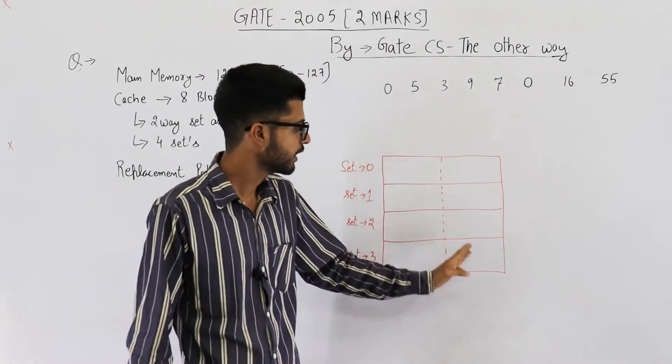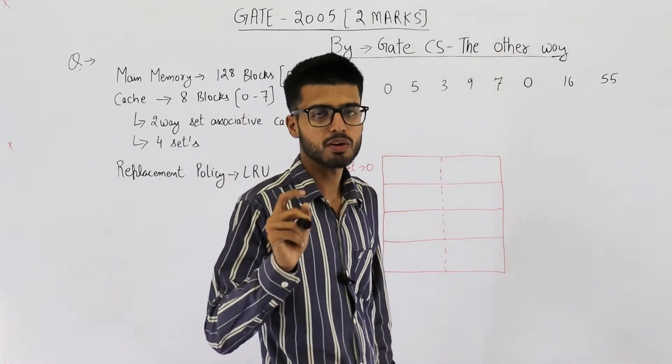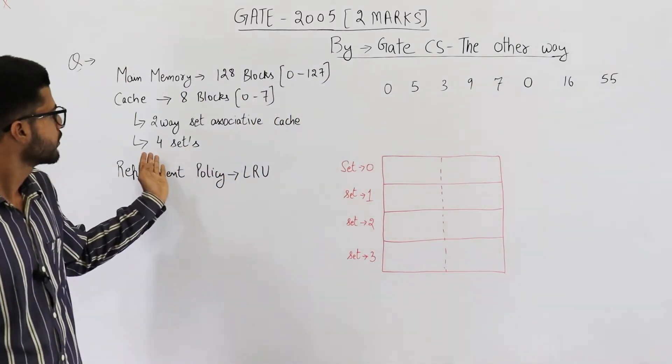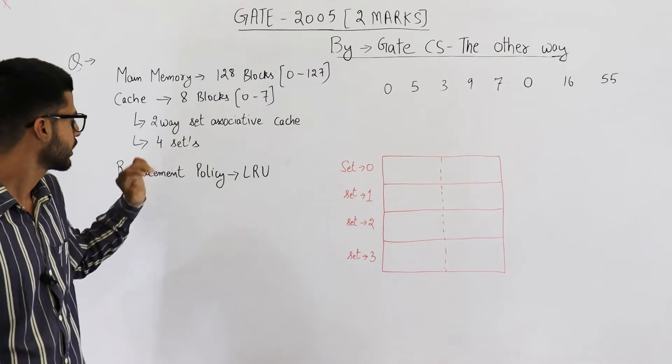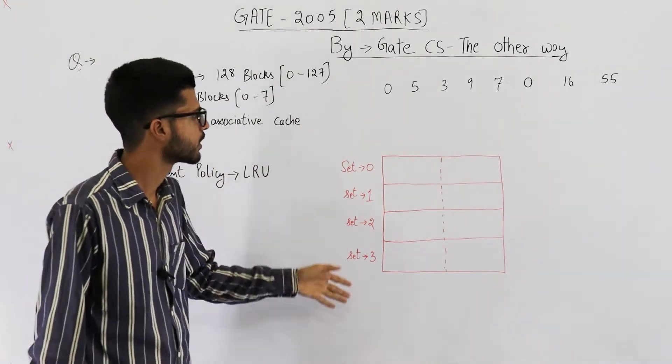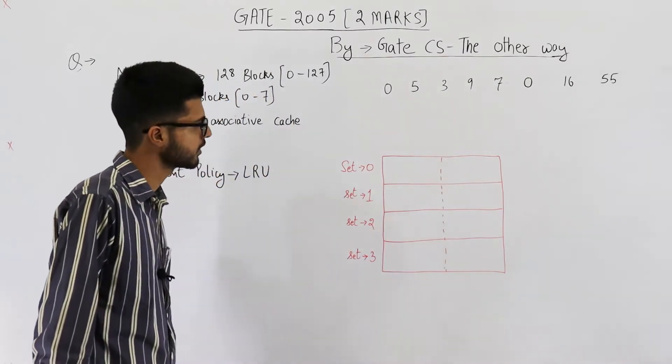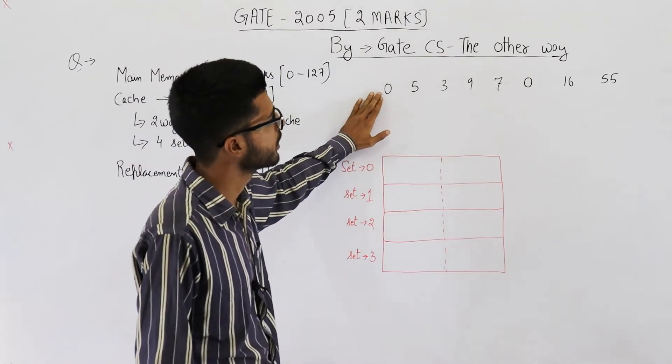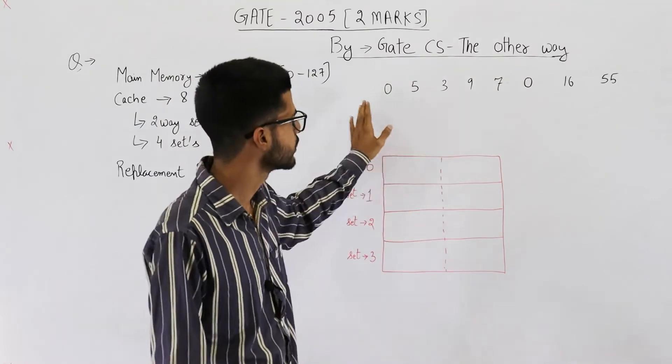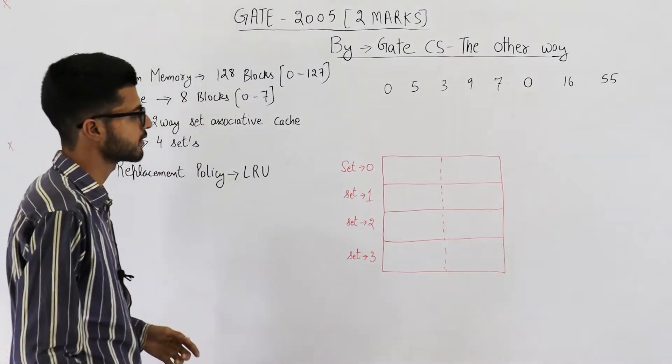Also, we have 8 cache blocks. If we combine 2 cache blocks into 1 set, we'll certainly have 4 sets only. Also, they've mentioned this information in question also. Even though mentioning this was not required, it could have been calculated simply. Anyways, next they're saying CPU tries to access some word in these blocks. So, the sequence given is this. Also, the replacement policy is LRU.